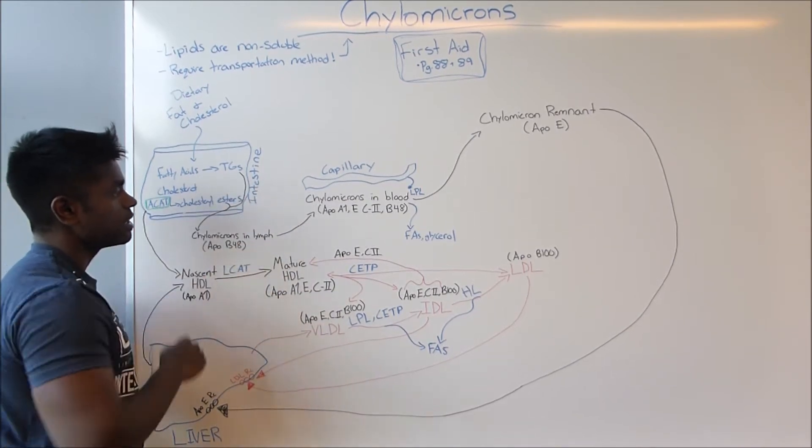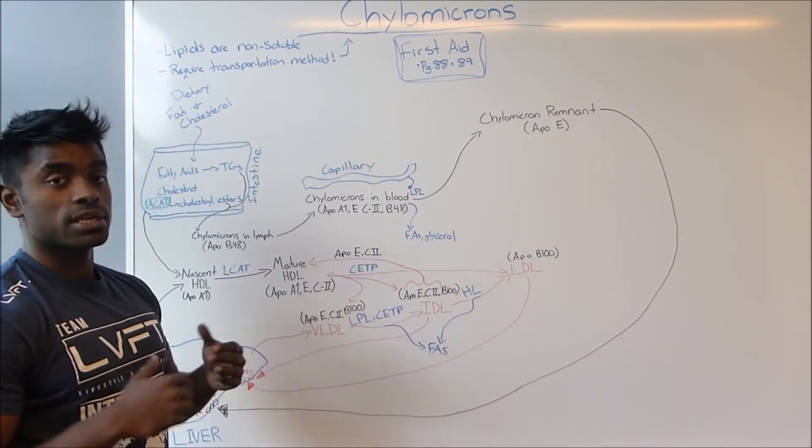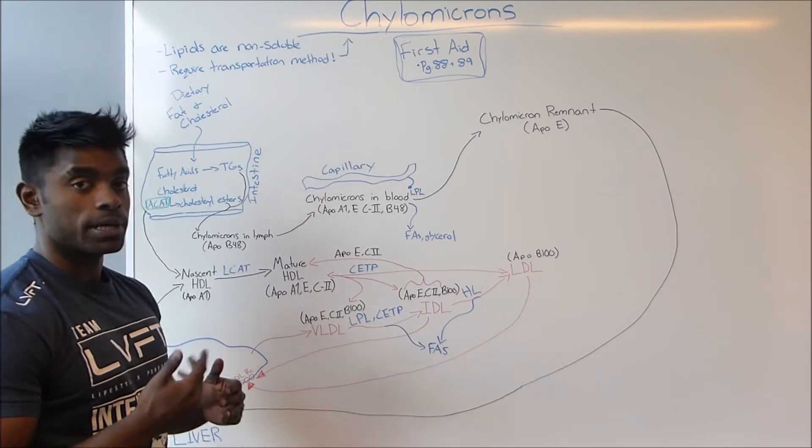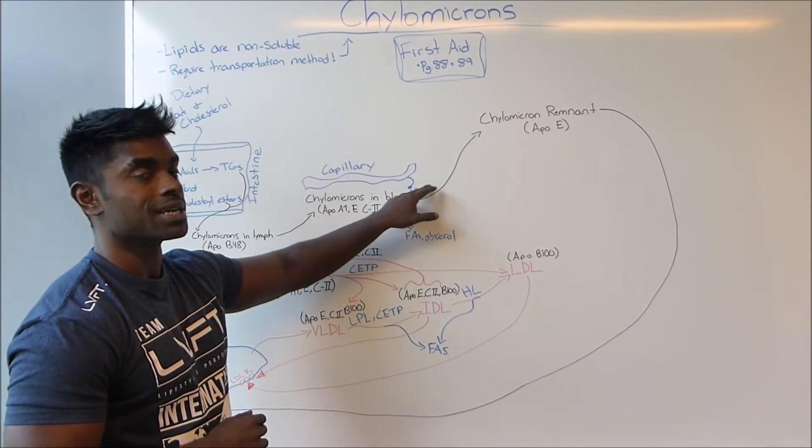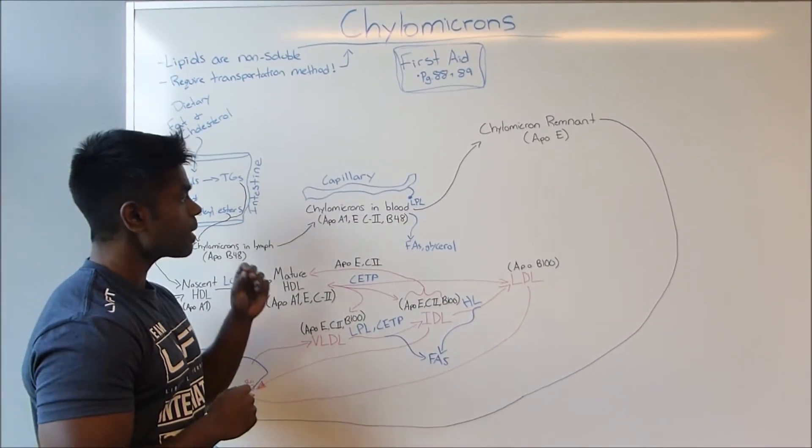Next, the chylomicrons travel from the lymph to the blood. Once it goes into the blood, obviously in the blood we have capillaries.